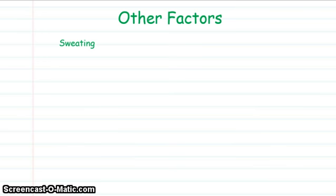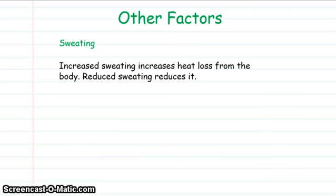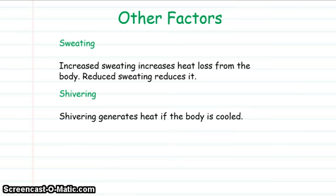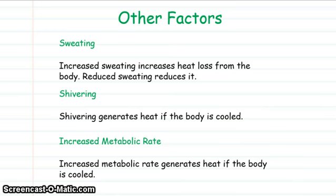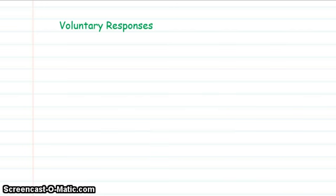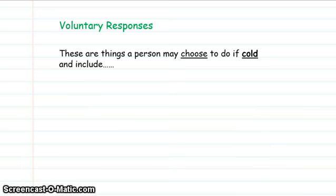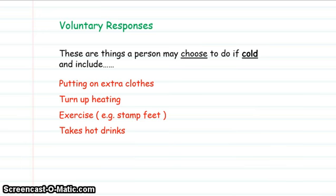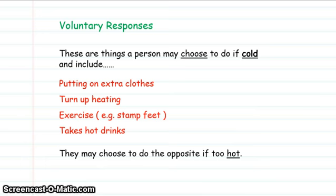Increased sweating reduces our body temperature by increasing heat loss. Shivering generates body heat if we are too cold, as does an increased metabolic rate. There are also voluntary responses — things we might choose to do if too cold, like putting on extra clothes, turning on the heating, doing some exercise, stamping your feet, or taking a hot drink. The opposite responses may occur if you are too hot.